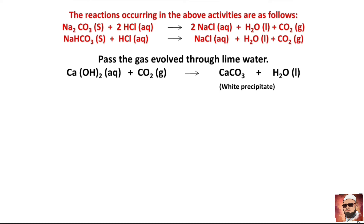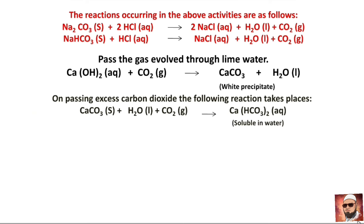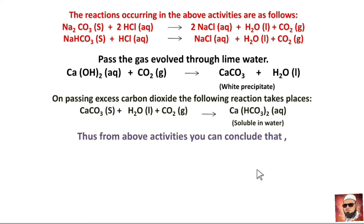The carbon dioxide gas formed can be passed into calcium hydroxide solution Ca(OH)₂, and you will observe that a white precipitate of calcium carbonate (CaCO₃) is formed along with water. On passing excess carbon dioxide, the following reaction occurs: CaCO₃ plus H₂O reacts with excess CO₂ to form calcium hydrogen carbonate Ca(HCO₃)₂, which is soluble in water.